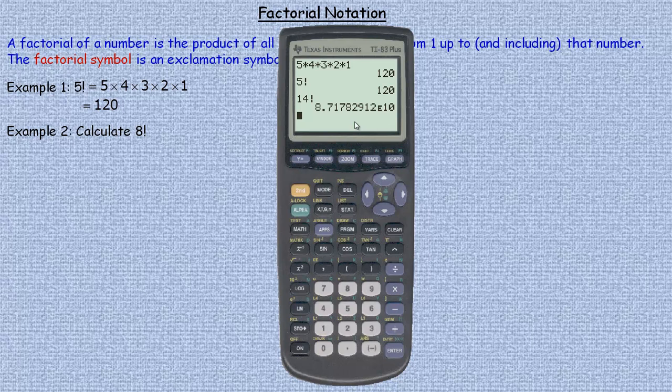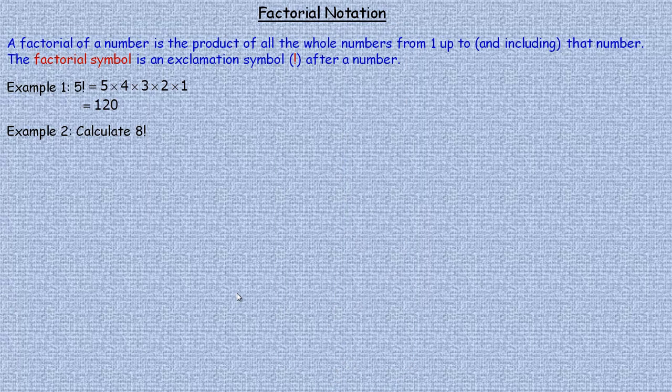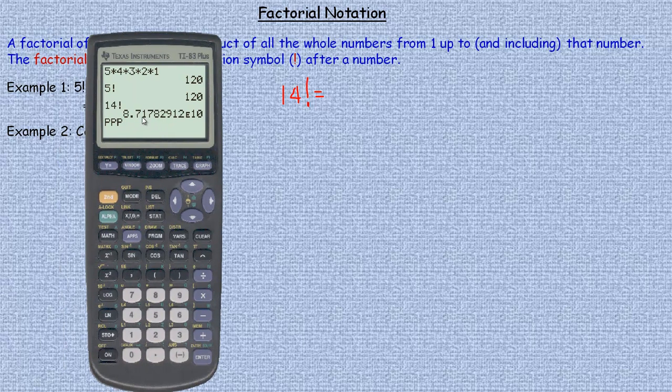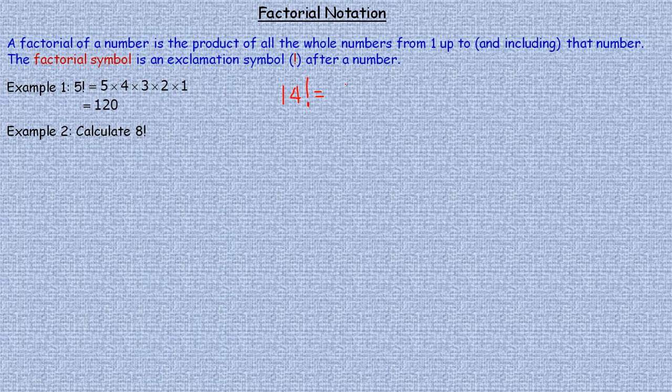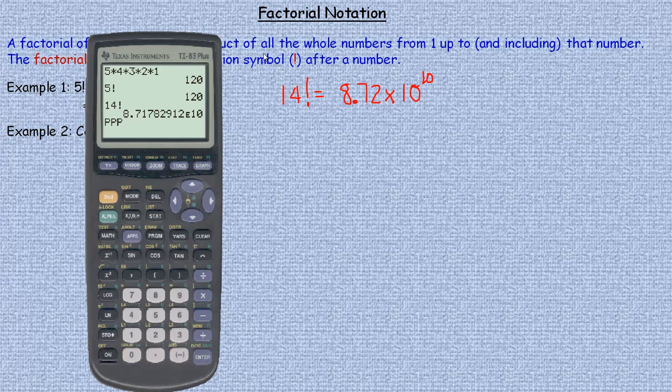If you get a large number, generally you don't write it like it is displayed in the calculator unless the calculator displays it in normal scientific notation. If I wanted to write 14 factorial, it's 8.72 times 10 to the power of 10. This after the E here, that's the exponent on the power of 10.